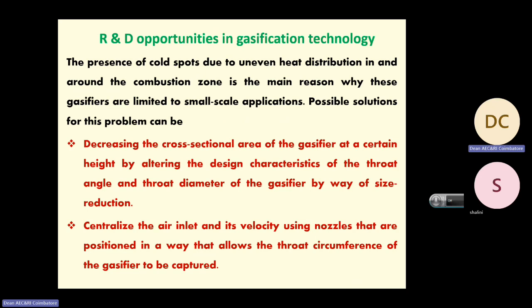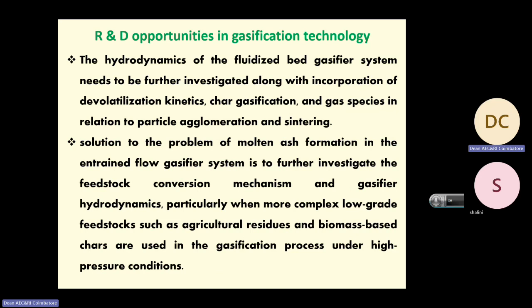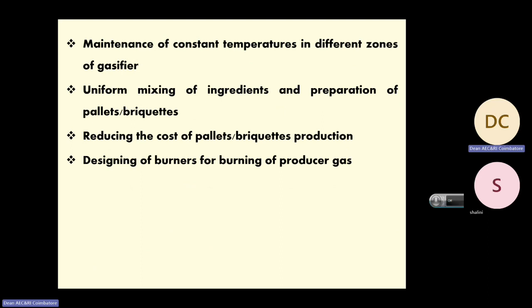Possible solutions for uneven heat distribution in gasifiers include decreasing the cross-sectional area at a certain height by altering throat angle and throat diameter, centralizing the air inlet and its velocity using nozzles positioned in the system. The vehicle system needs further investigation incorporating devolatilization kinetics and gas species. Regarding ash formation in entrained flow gasifiers, wheat stock conversion mechanisms need further investigation. Maintaining constant temperature in different zones, uniform mixing of ingredients, and optimization of pellets and briquettes — if density and ingredients are constant, gas yield will improve.